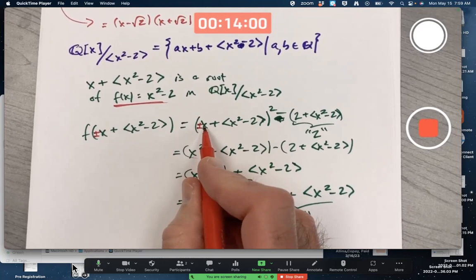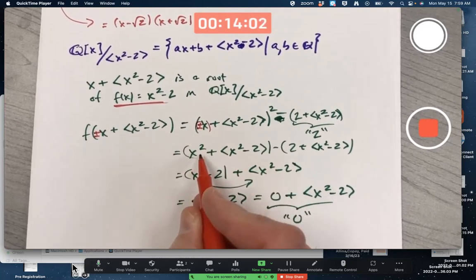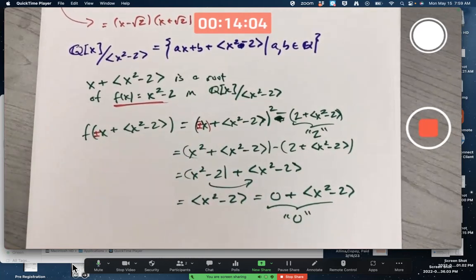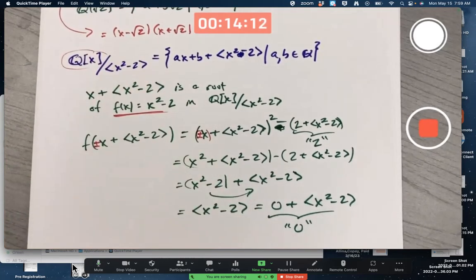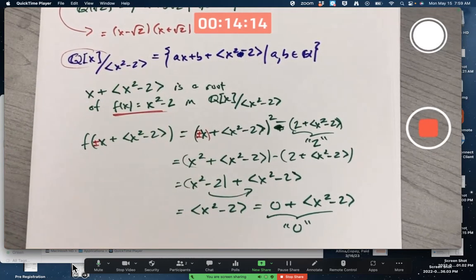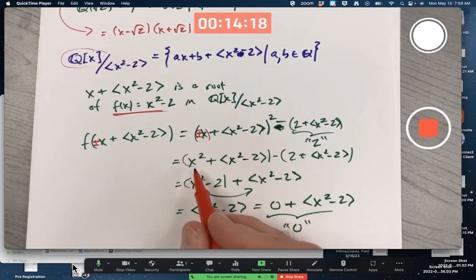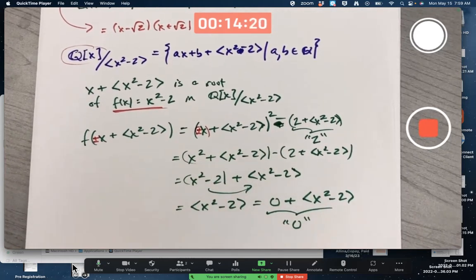When you square that representative, you get x². There's no modding going on here with this example. I'm not modding by 2 or something. The ring I started with was Q[x], not Z₂[x] or something. Plus or minus x squared is x² in either case.